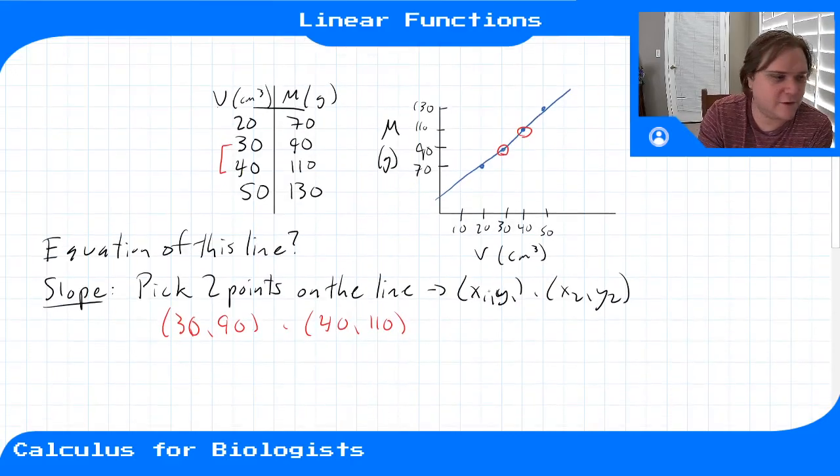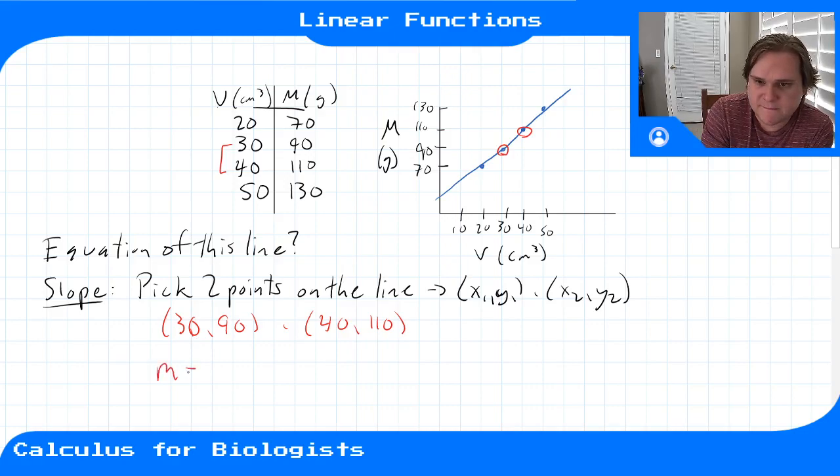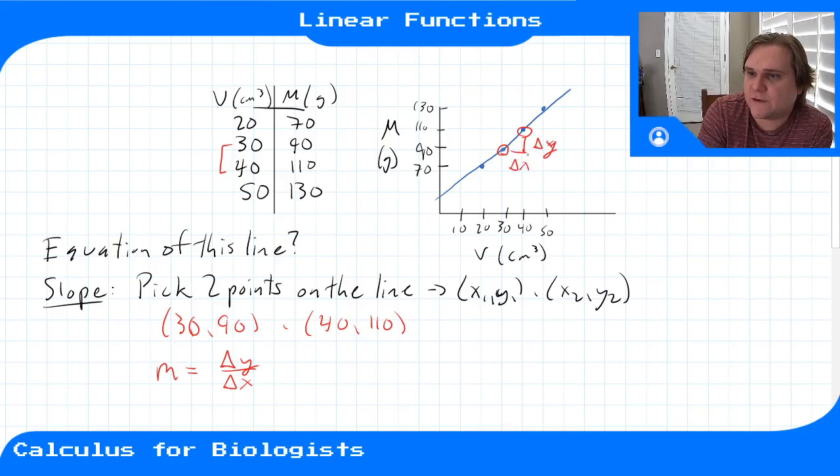And then if you recall, the slope, m, is change in output over change in input, right? It's this distance, delta y, over delta x. So delta y is our y2 minus y1. Our delta x is our x2 minus x1.